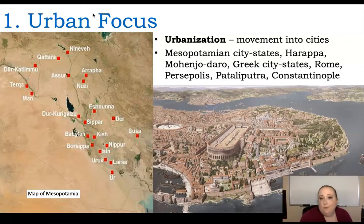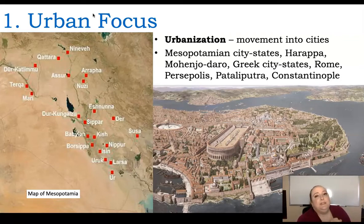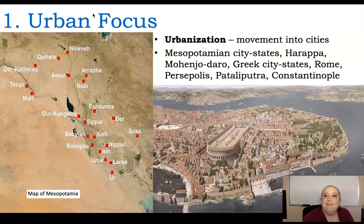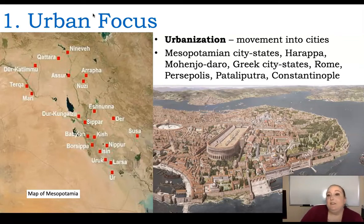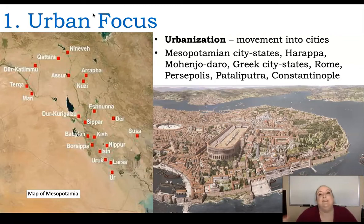Now back to the six things we really need to focus on. The first is urbanization — when we start to move into cities. You have Mesopotamian city-states, and cities like Persepolis, Harappa, and Mohenjo-daro. Essentially we're moving out of small areas and building cities up. This is what's happening during the rise of cities.